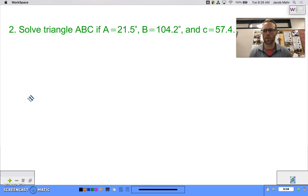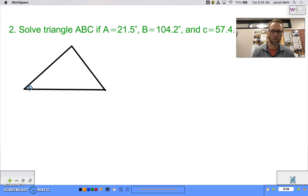So again, I'll just sketch a generic triangle here. Let's see here. A is 21.5, B is 104.2, and C is 57.4. Taking a look at my generic triangle, I don't think that's going to fit too well at all. So let's see if we can adjust this.